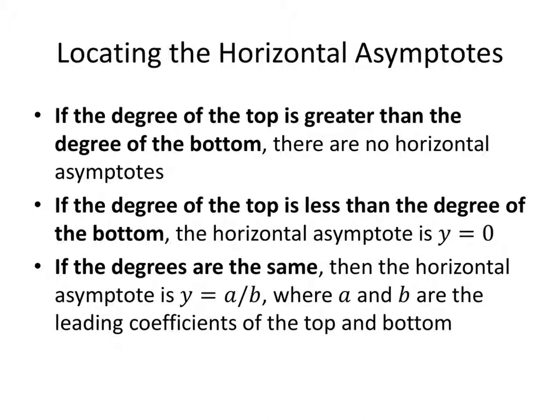Now that we've identified the vertical asymptotes, let's talk about horizontal asymptotes. Horizontal asymptotes depend on the degree of the numerator and denominator. If the degree of the top is greater than the degree of the bottom, there are no horizontal asymptotes. If the degree of the top is less than the degree of the bottom, there's a horizontal asymptote at y equals 0. If the degrees are the same, you get a horizontal asymptote at y equals a divided by b, where a and b are the leading coefficients of the top and bottom.